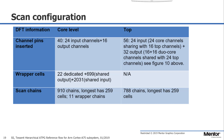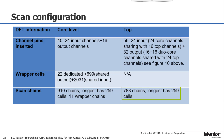The scan configuration is shown here. At the core level, we have 910 scan chains, with the longest chain having 259 cells. Among these scan chains, 11 are wrapper chains to make the gray box view. Only 22 dedicated wrapper cells were needed for our true hierarchical DFT flow in this case, which is a really tiny overhead. At the top level, we have 788 scan chains, with the same longest chain length of 259 cells.